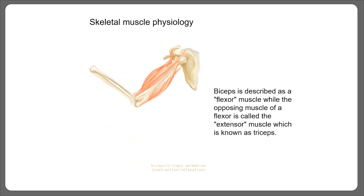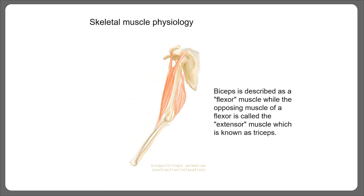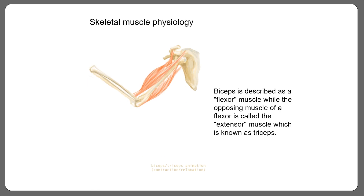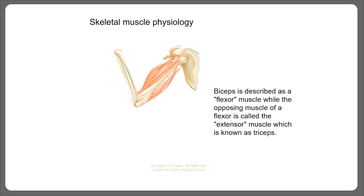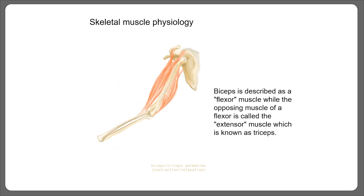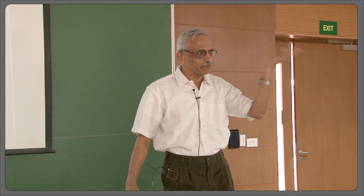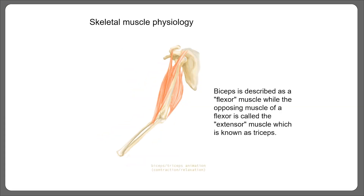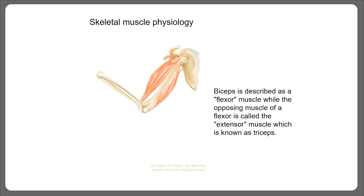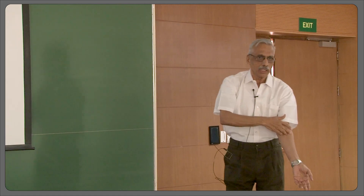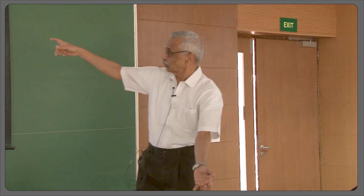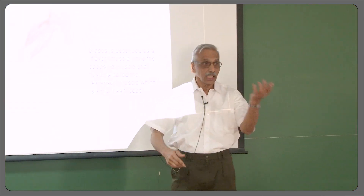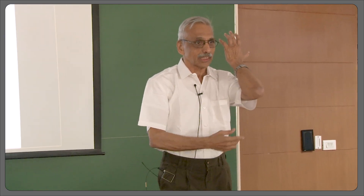If you look at the skeletal muscle — and even the cardiac muscle — you find very clear striations: dark and light patches. Here's an interesting animation showing someone flexing the muscle. The muscle is inserted on the pectoral girdle at one end, and the other end is on the radius. As the muscle contracts, you pull in the hand — that pulling action is the flexor muscle.